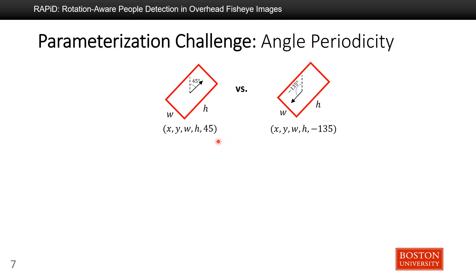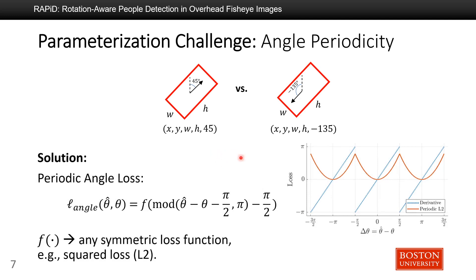For example, in this figure, the left one is the prediction and the right one is the ground truth. The predicted angle is 45 degrees while the ground truth is minus 135 degrees — they appear to have a large difference, but they are actually the same bounding box. So we cannot simply use traditional losses such as L1 or L2 loss because they will penalize correct predictions. To solve this, we propose a periodic angle loss, where f can be any symmetric loss function such as L2. Basically, this formula takes any loss function and makes it pi-periodic.